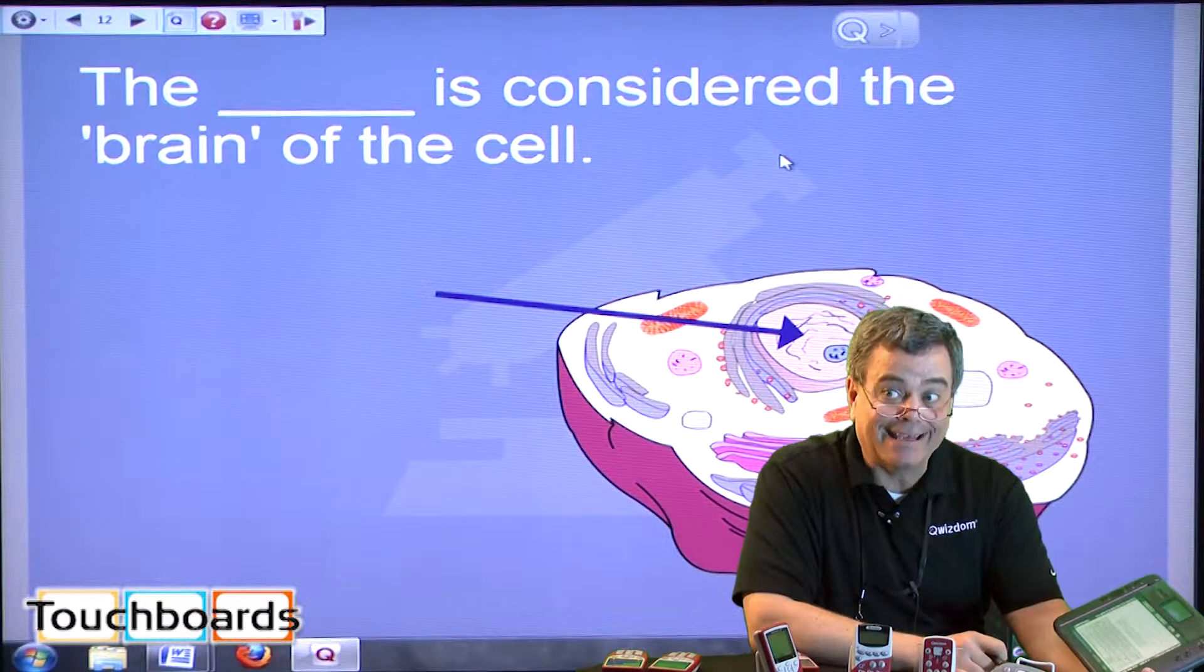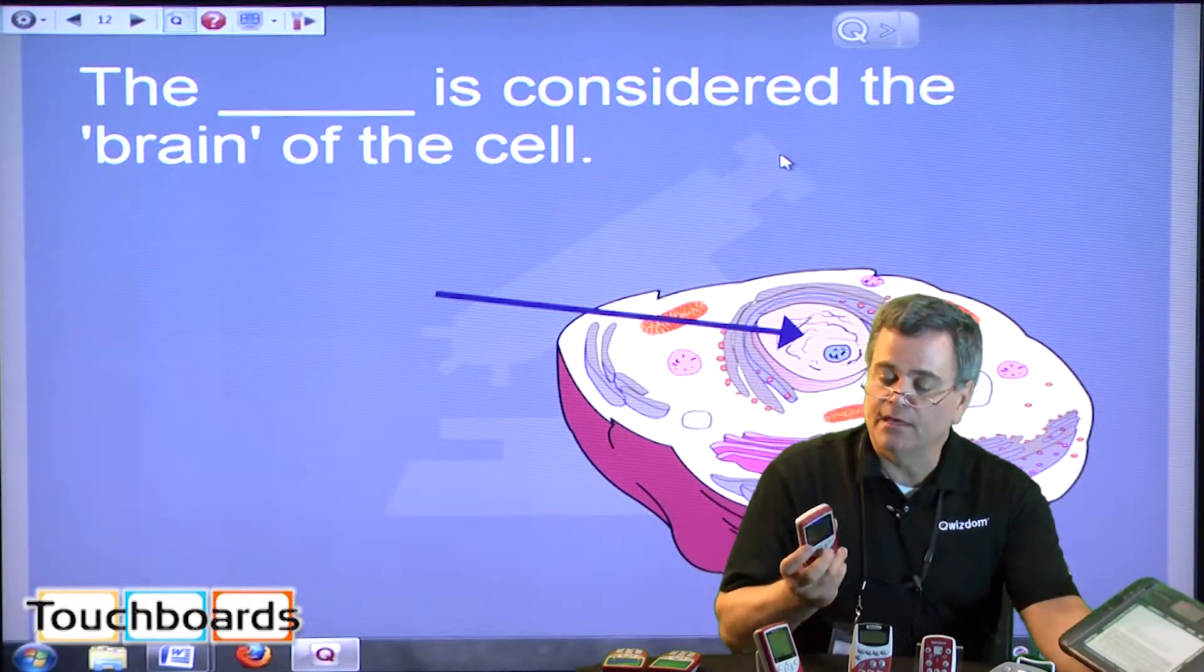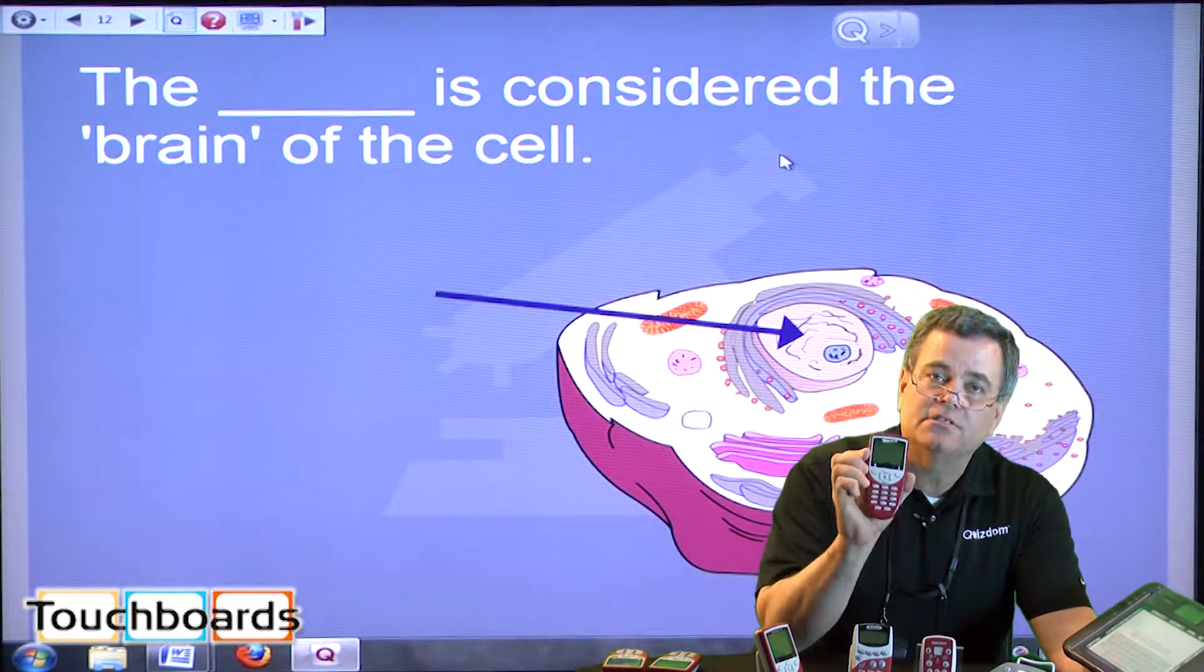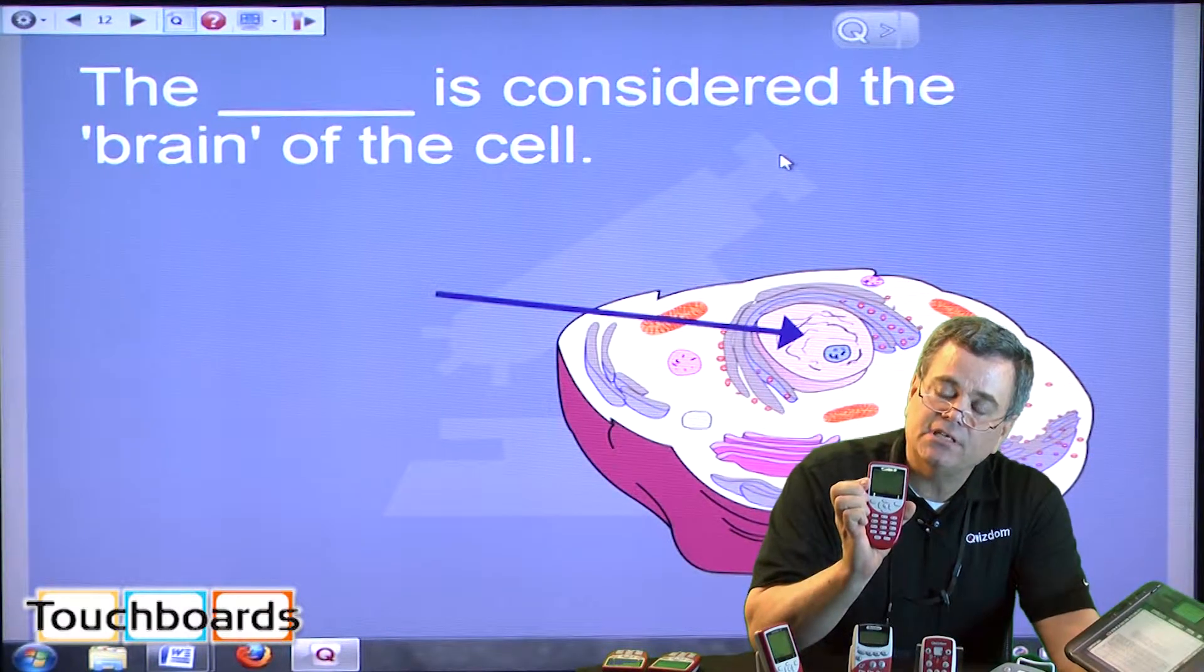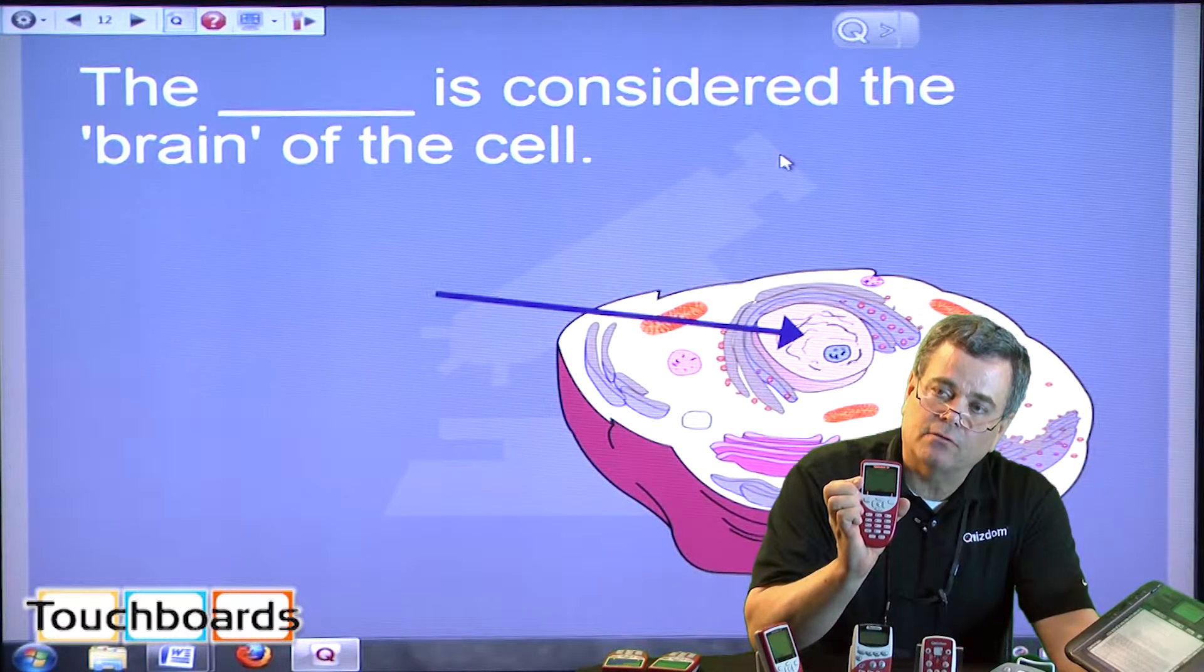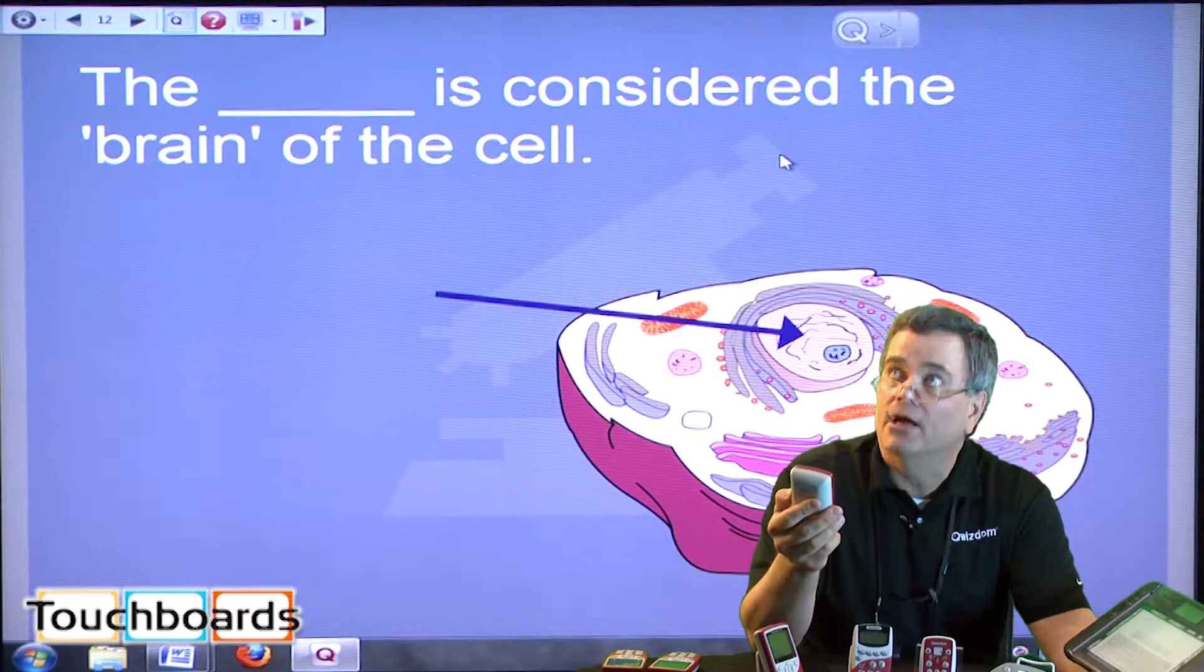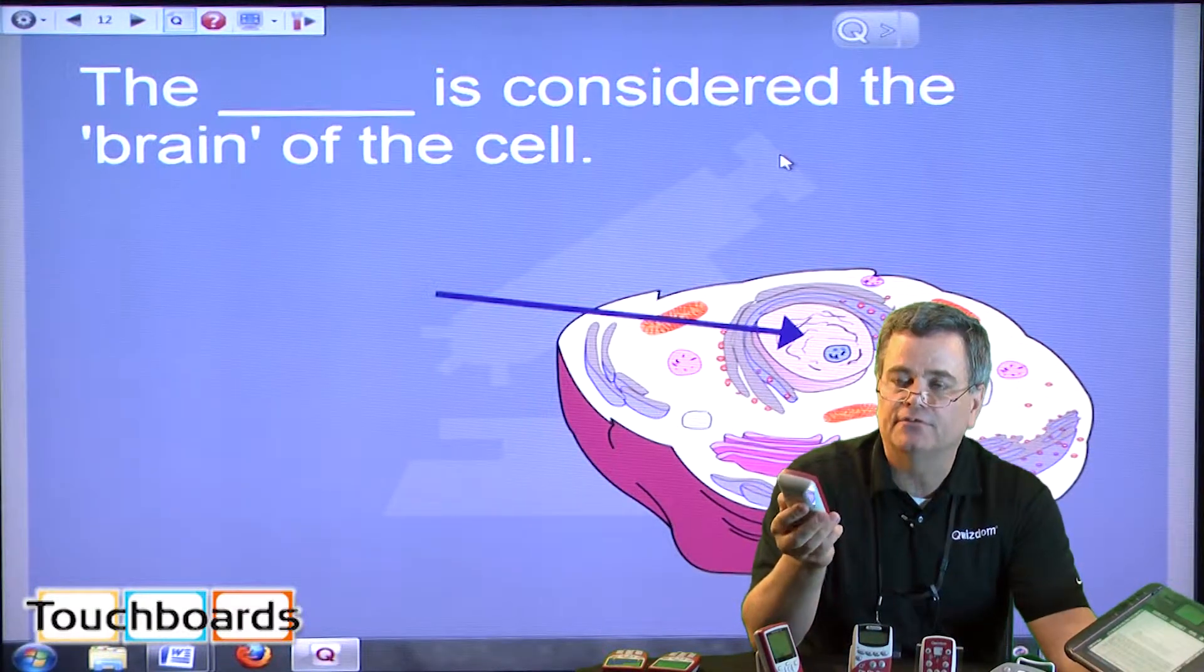Now this is, the blank is considered the brain of the cell. On the LCD screen, on the Q6, you can actually see the question. You can actually display the question on the LCD screen so the students aren't looking up at the screen, looking down at the remote, and so on.